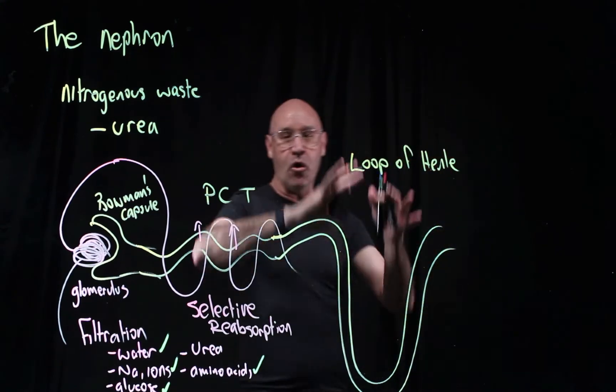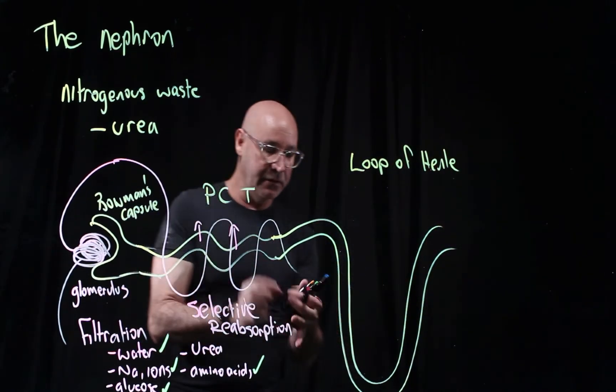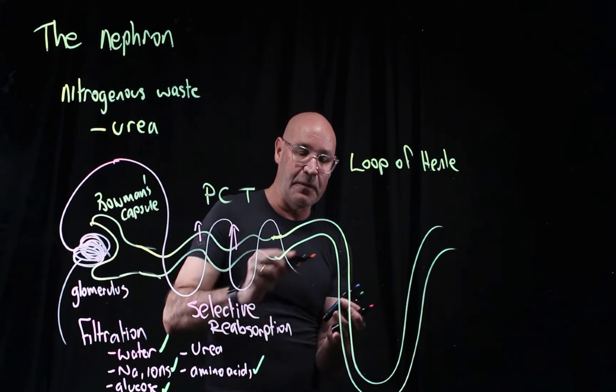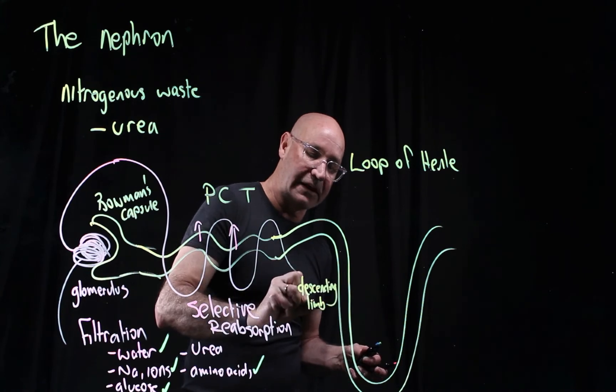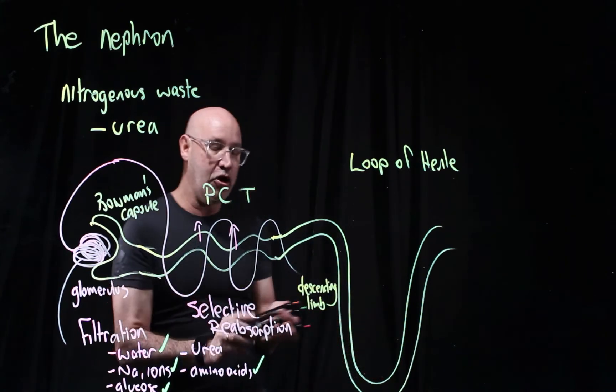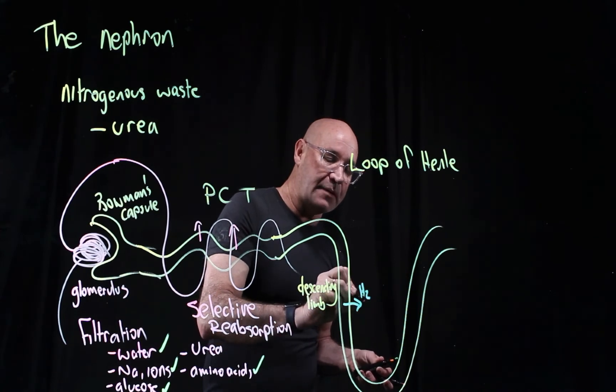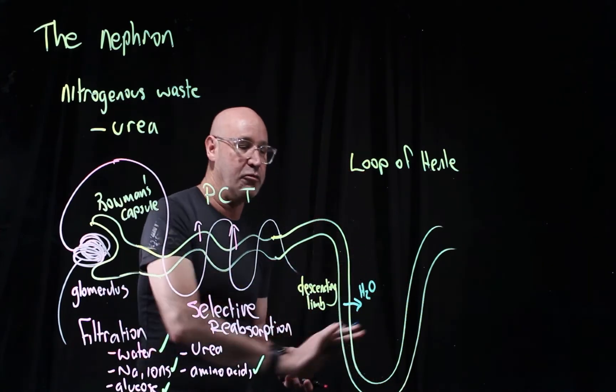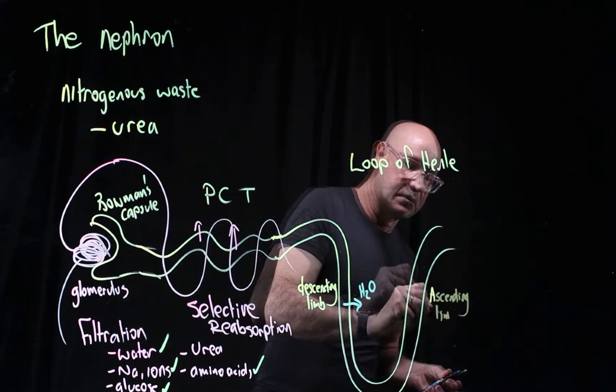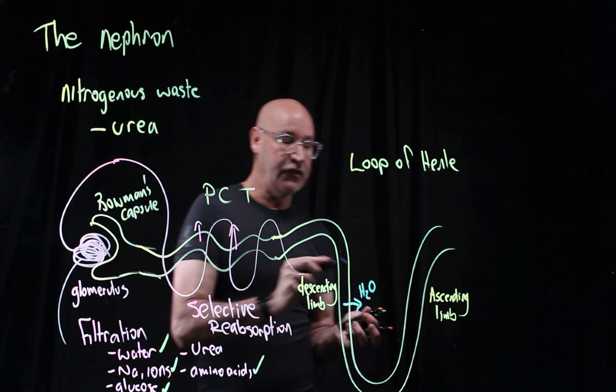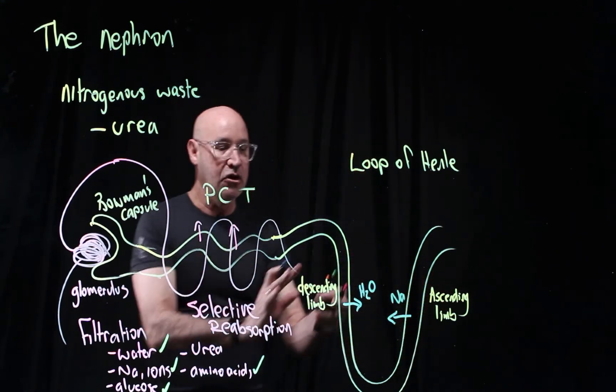The loop of Henle is all about concentrating the urine. The descending limb is permeable to water, so water can permeate out of the loop of Henle. The ascending limb is permeable to sodium, which is actively pumped out of the nephron.